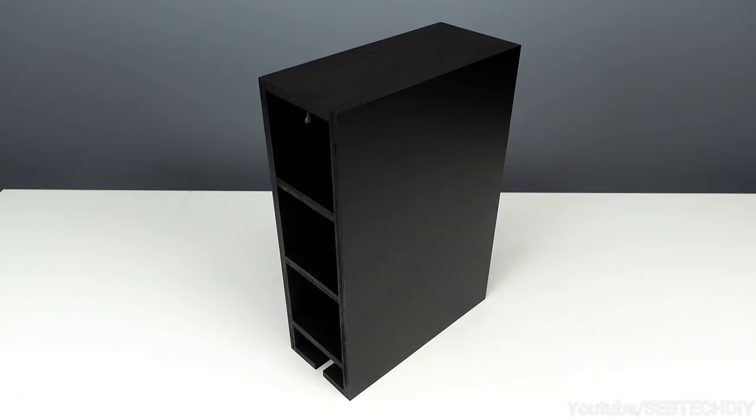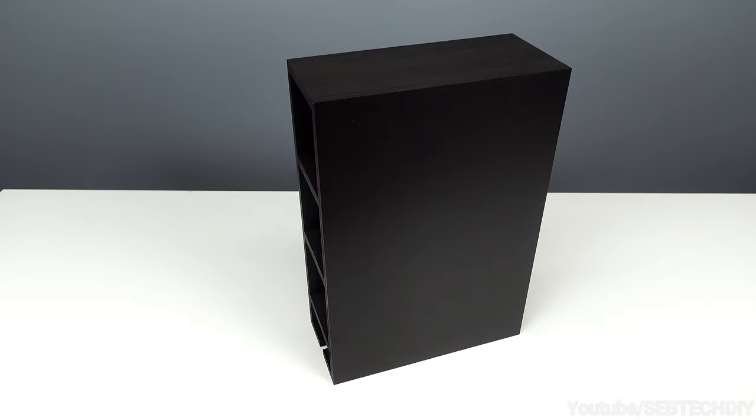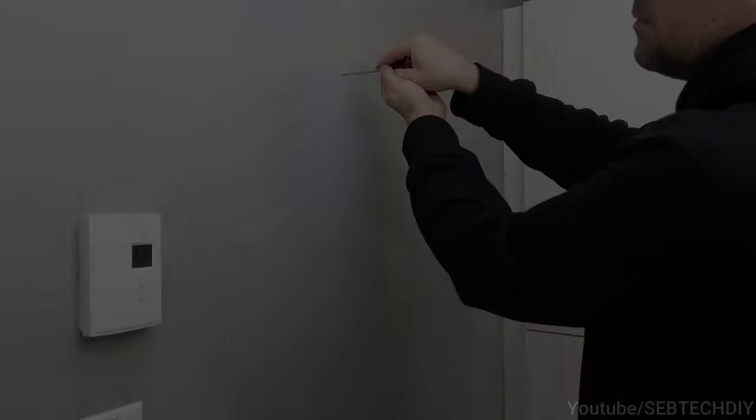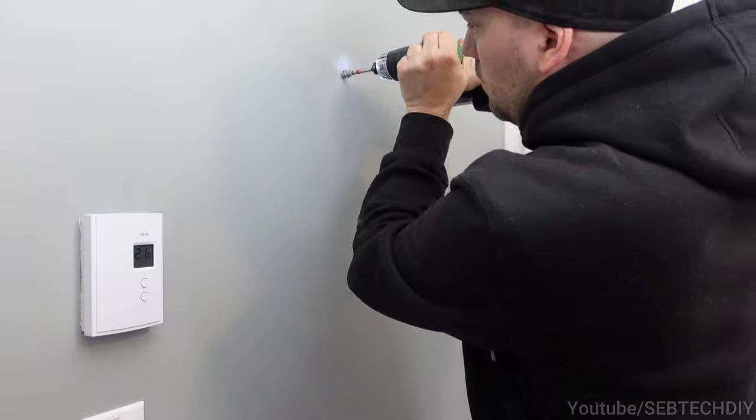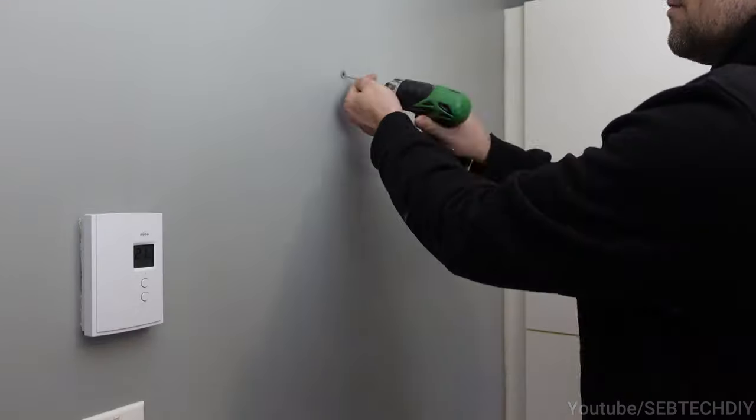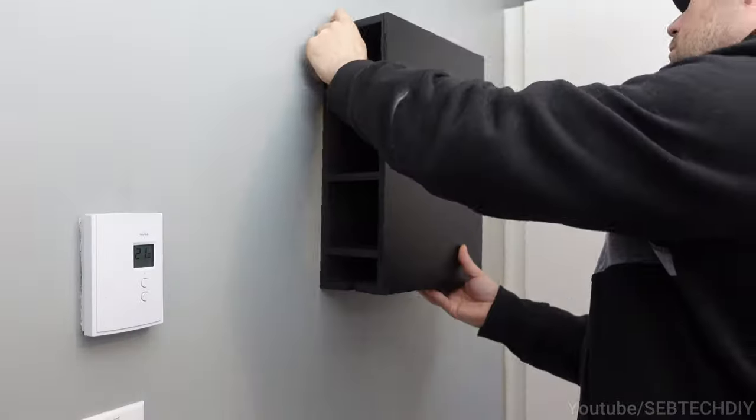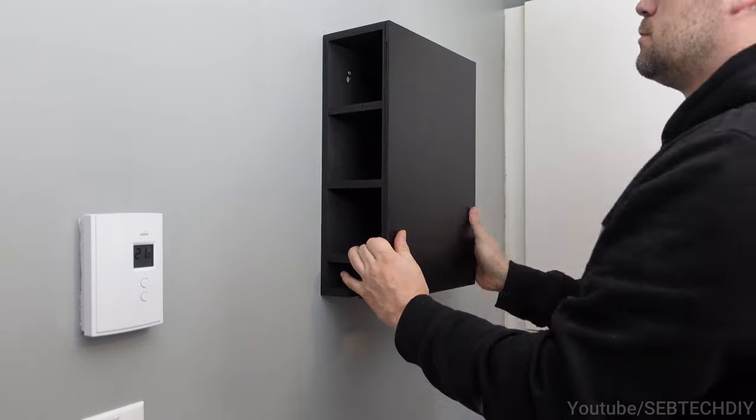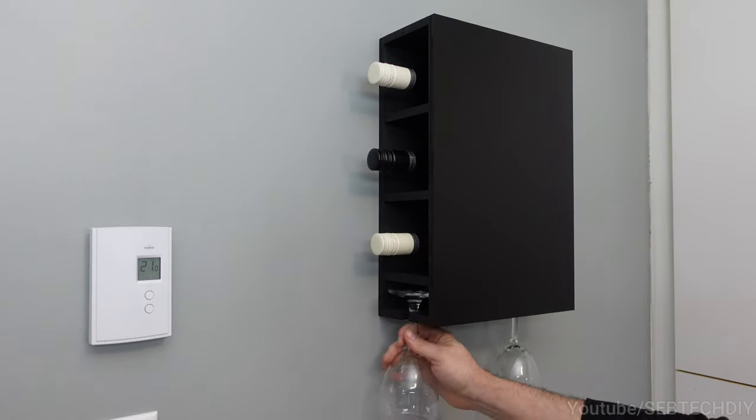Alright, installation time. First I drill two drywall anchors, then I add the screws, and finally we can hang it up using the keyholes we drilled earlier. And we are done, guys! Put your favorite bottles in and enjoy.